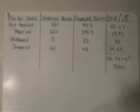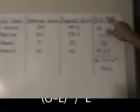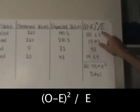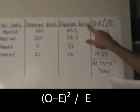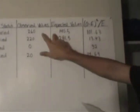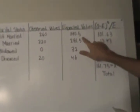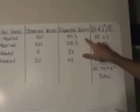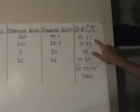In order to see if the distribution in the sample varies from the population, we use the equation O minus E squared divided by E, where O is observed values right here, and E is expected values. And basically what we do, for example, for non-married, we would take 260 minus 140.5. We would square that and divide it by 140.5, and that gives us 101.63.